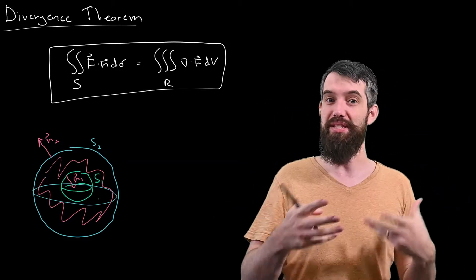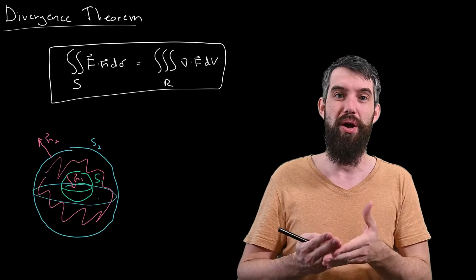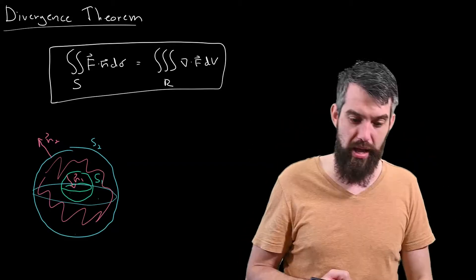So basically, integrating this differential operator of the divergence over the entire region was just going to give you the flux across the boundary.